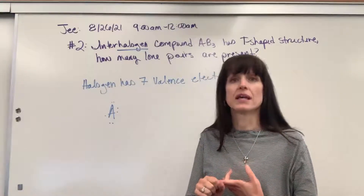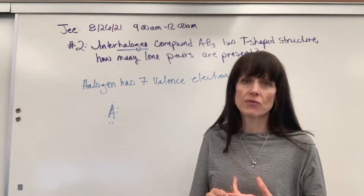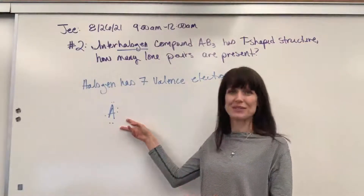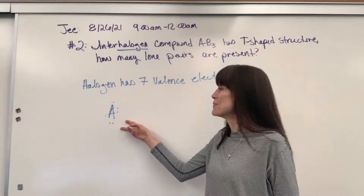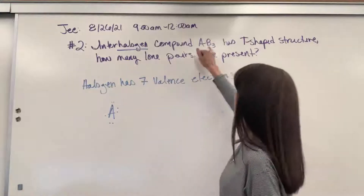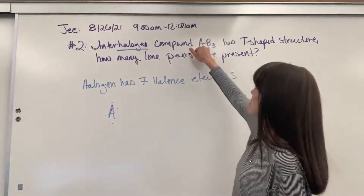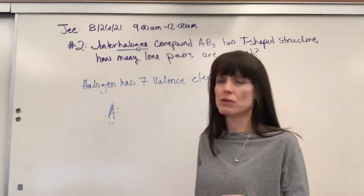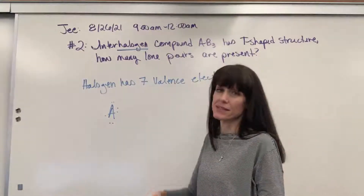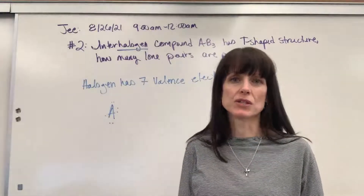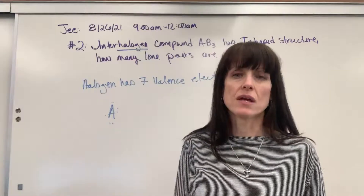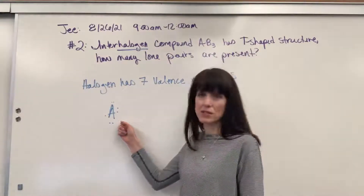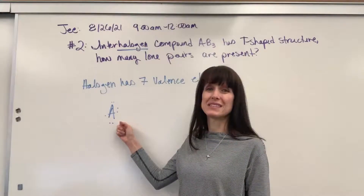The second thing we look for is a coordinate covalent bond. Halogens can never do coordinate covalent bonds, because one of these atoms — or the central atom — would share two electrons, and if I share two electrons with this, it puts us at nine. It won't have eight valence electrons.